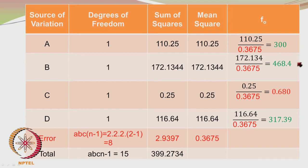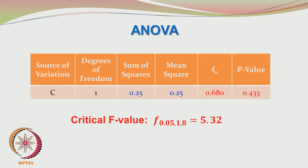468.4 is even more so. The F value of 0.68 corresponding to factor C is however less than 5.32, and for factor D, 317.3 is higher than the critical F value. So factor C is not significant here. The C insignificance is highlighted in this slide. What we mean by C being insignificant is that factor C is not influencing the response and hence agrees with the null hypothesis which said that factor C is not important.